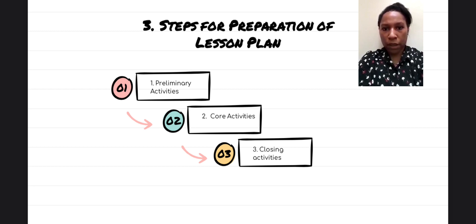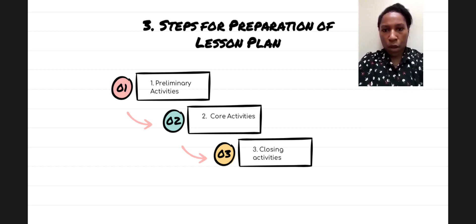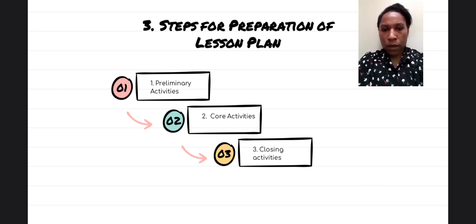The second point is core activities. Number one: using learning models, learning methods, learning media, and learning resources tailored to the characteristics of students and subject. Number two: using an integrated or scientific approach, inquiry and discovery, or project-based learning suited to the characteristics of the competence and education level. Number three: containing the development of knowledge and skills integrated in learning.